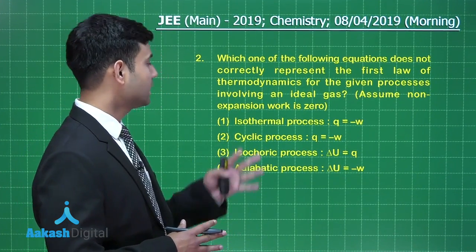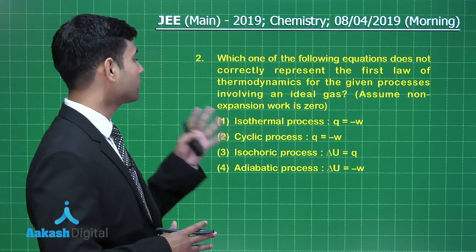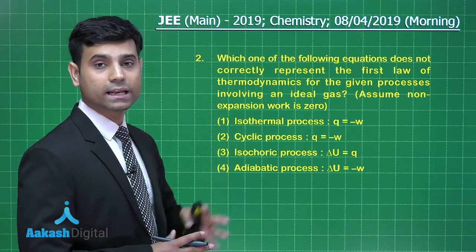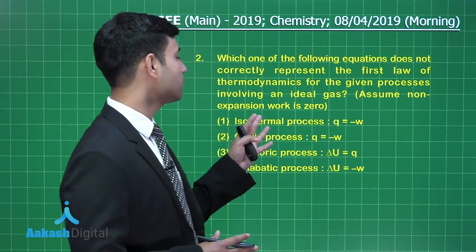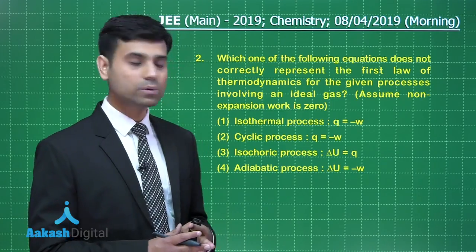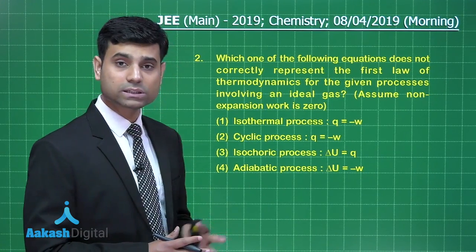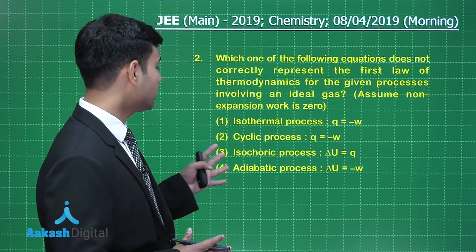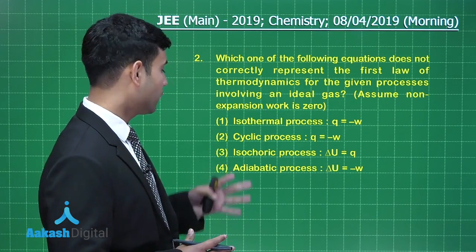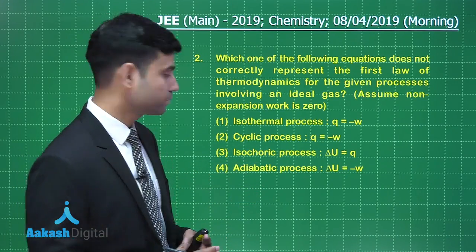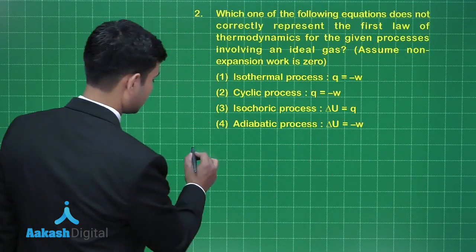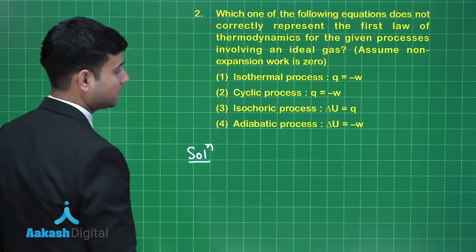The next question says: which one of the following equations does not correctly represent the first law of thermodynamics for the given processes involving an ideal gas? Assume non-expansion work is zero. The options are: isothermal process Q = -W; cyclic process Q = -W; isochoric process delta U = Q; and adiabatic process delta U = -W. Let us check all the options one by one.